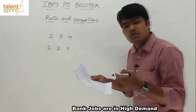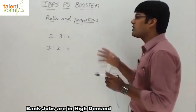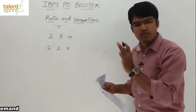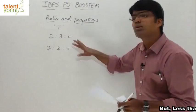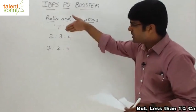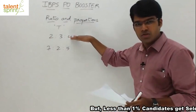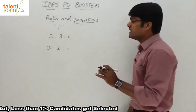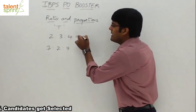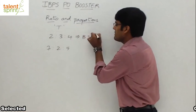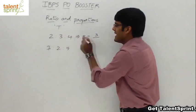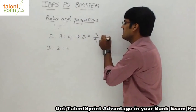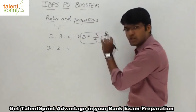Since the question is talking about the difference in B's amount, let us work on B. Let us assume that the total amount is T, which is the same in both cases. In the actual distribution of 2:3:4, B should get 3 parts out of 9 parts total — that is, 3/9 × T, which gives B's actual value.